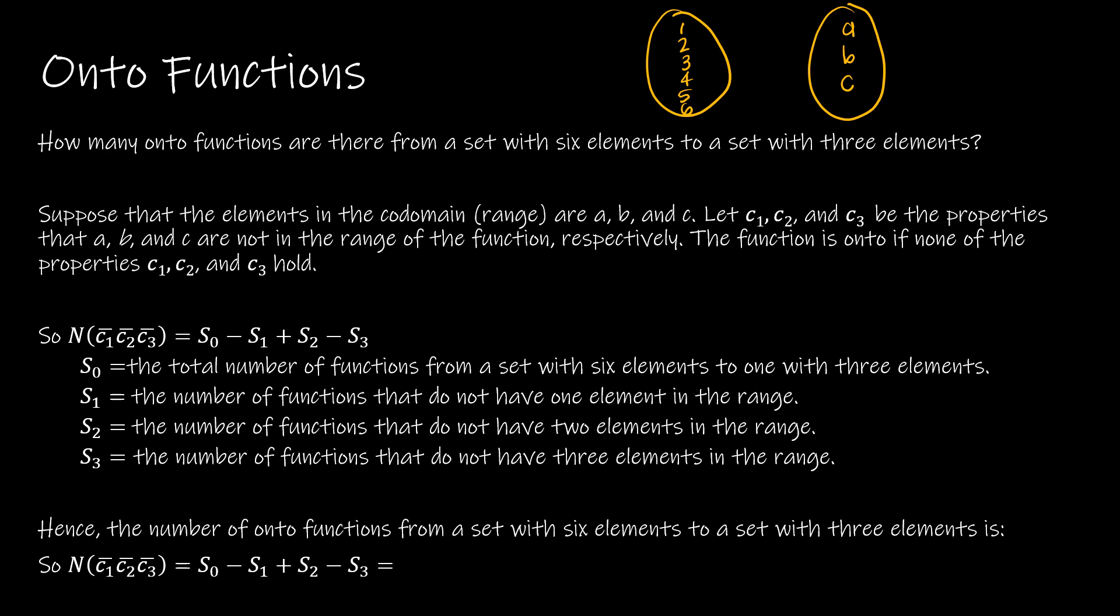An onto function is where every element here in the co-domain is being mapped to by some element in the domain, which means whatever our mapping happens to be, we can't have it where A is not mapped to or B is not mapped to or C is not mapped to. So that is where we're going to come up with our conditions.